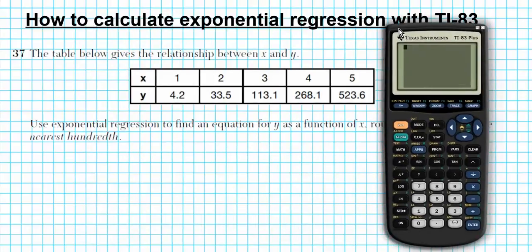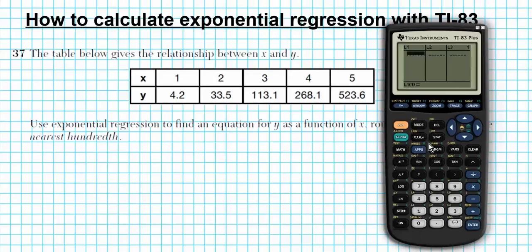All right, so let's go ahead and enter the data set into our TI-83 calculator. The first thing we're going to do is press the Stats button, and then we have Edit — press Enter. So Stats and Enter takes you to the Edit menu. We have two columns and we're going to enter the data into the first two columns. L1 will be X, and L2 will be Y. So let's go ahead and enter the X values first.